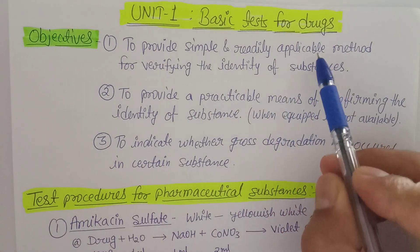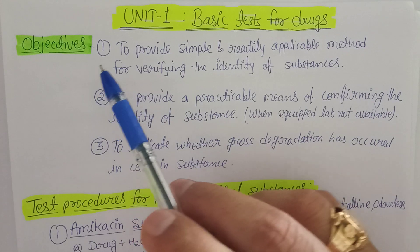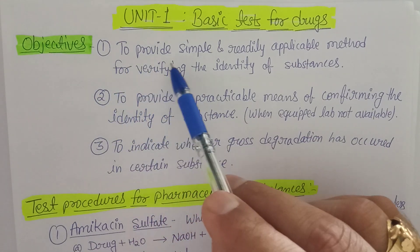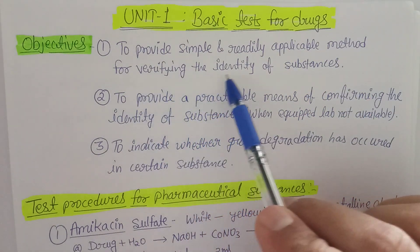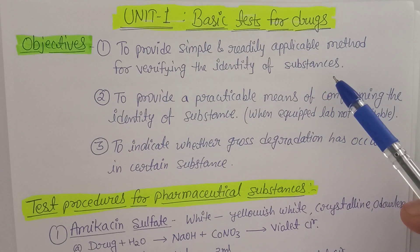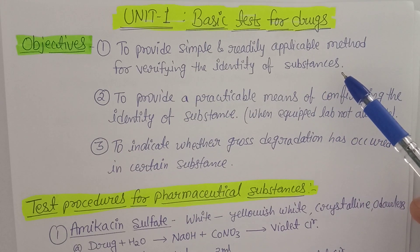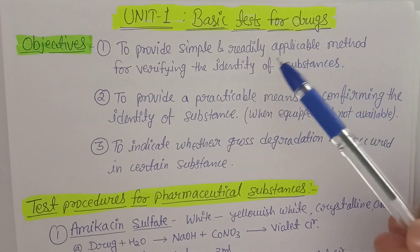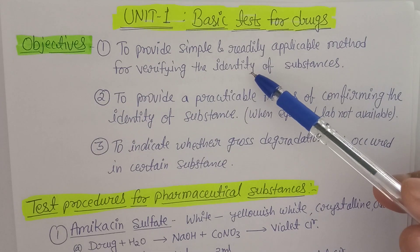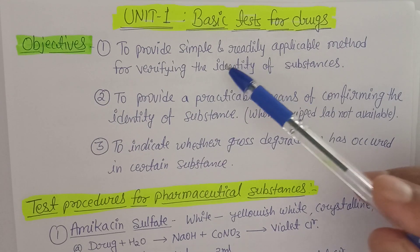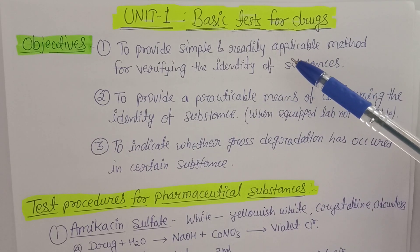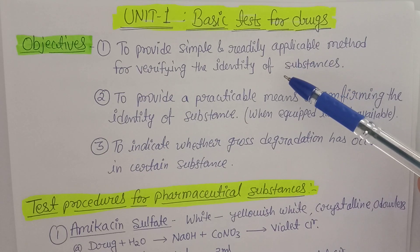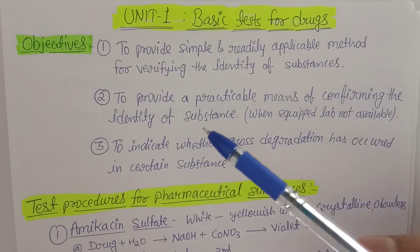Let's start with Unit 1, the basic tests for drugs. The first objective is to provide simple and readily applicable methods for verifying the identity of substances. There are so many types of drugs and pure pharmaceuticals available — the question is how we identify whether these are the pure drug or not, using a simple method applicable in every lab.